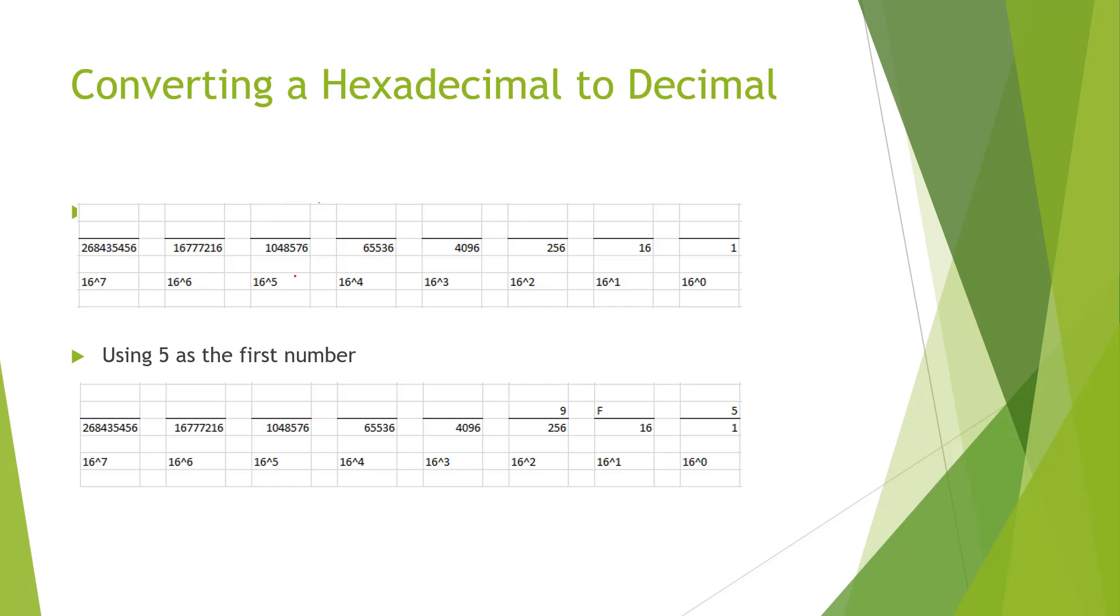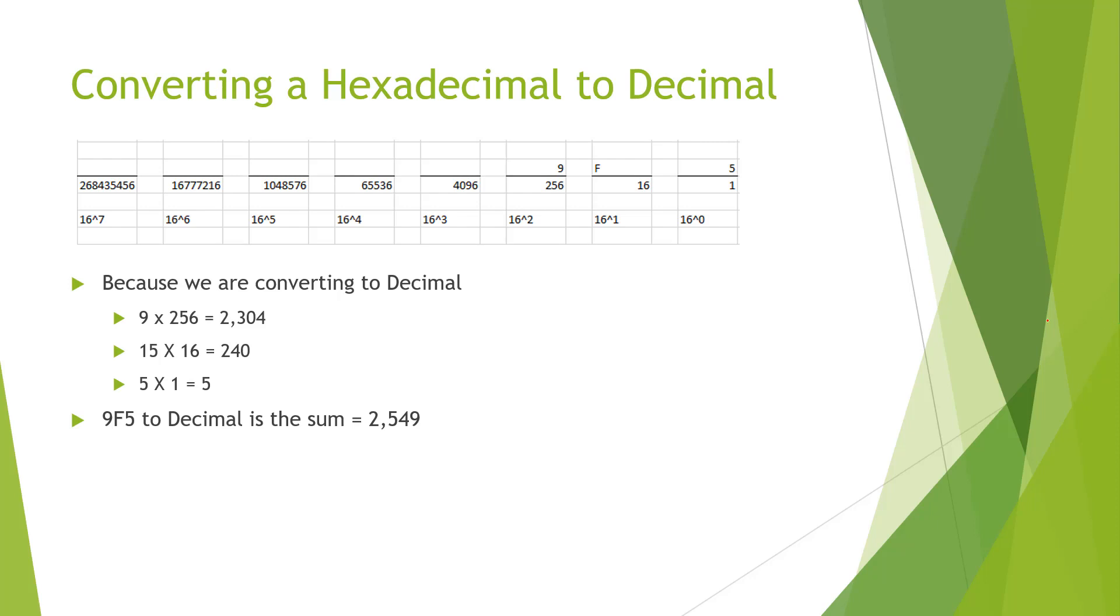So one way we can do this, let's say, for example, we want to convert 9F5. We break it down, 5 in the first position, F in the second position, 9 in the third position. We can actually do 5 times 1 will be 5. F actually is 15.